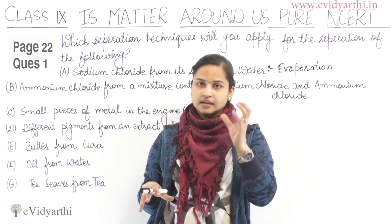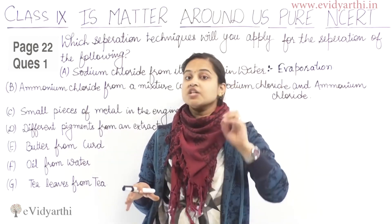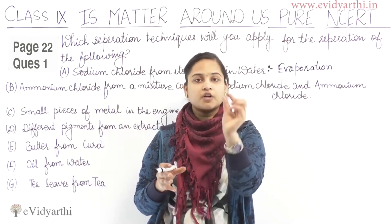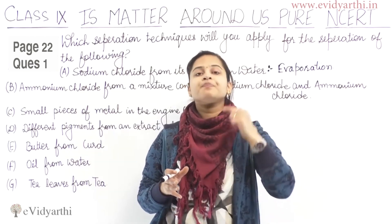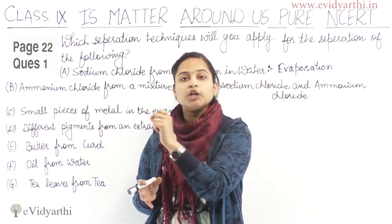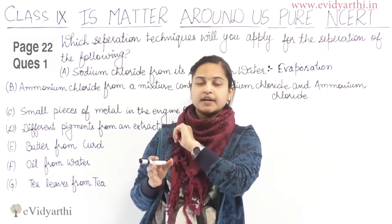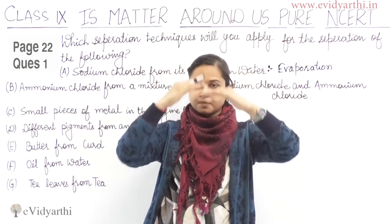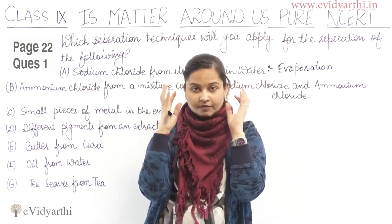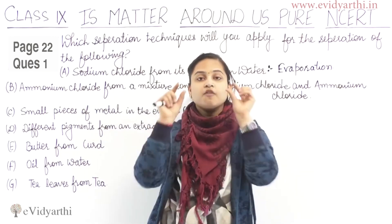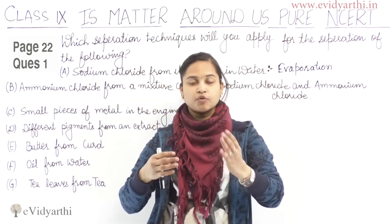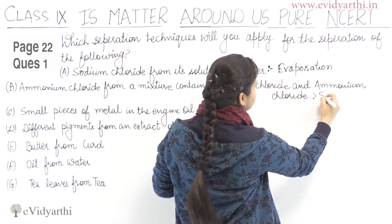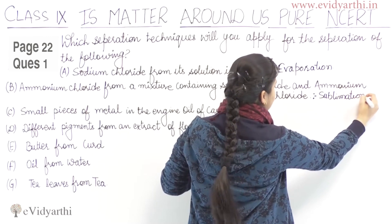Sublimation — what happens? We use a Bunsen burner, wire gauze, and a china dish. In the china dish, we add the mixture. Then we place an inverted funnel on top and block it. We turn on the Bunsen burner. Because ammonium chloride is volatile, the ammonium chloride vapors will be condensed inside the funnel. This way, ammonium chloride is separated from sodium chloride. This process is known as sublimation.